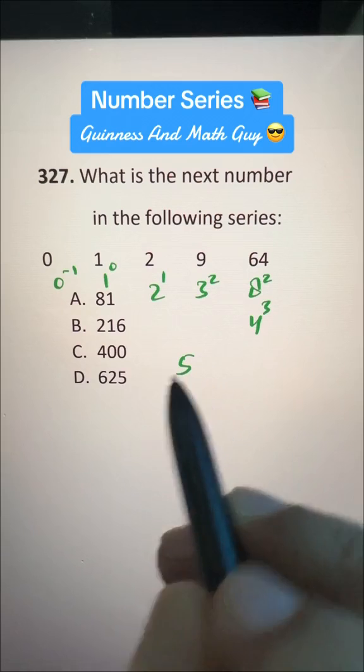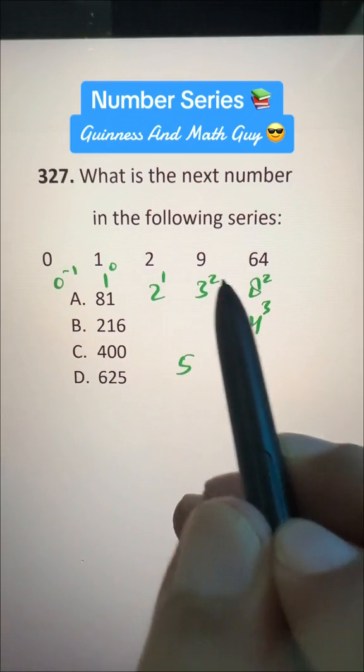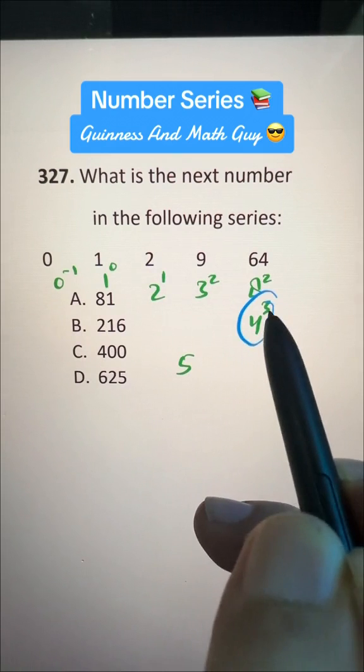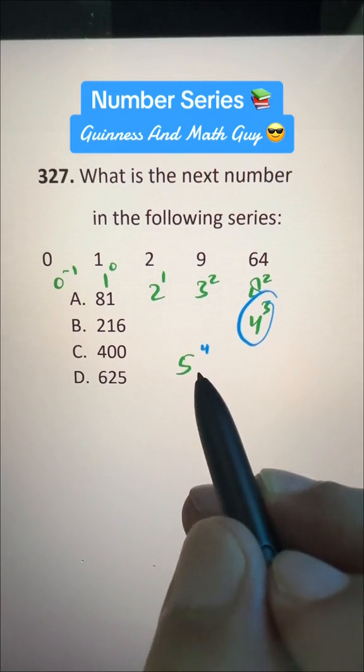And now we have 5 as the base. And for powers, we have minus 1, 0, 1, 2, 3. This is the number 3, and now we should have 4 here.